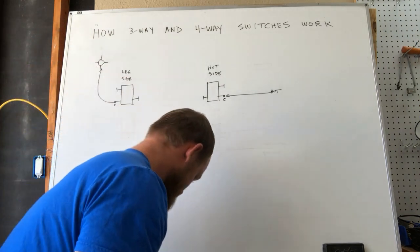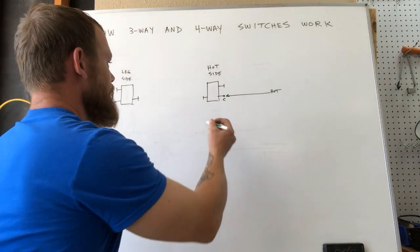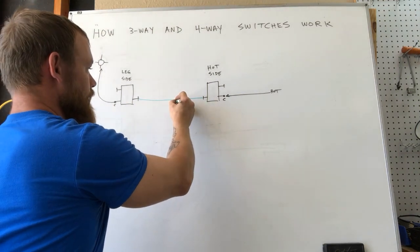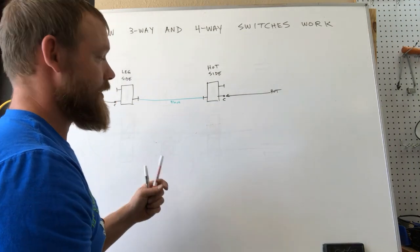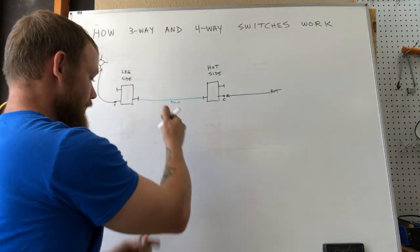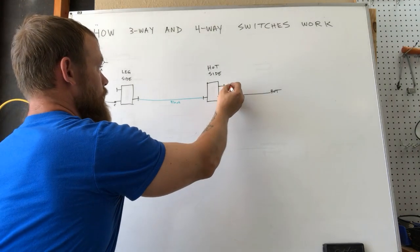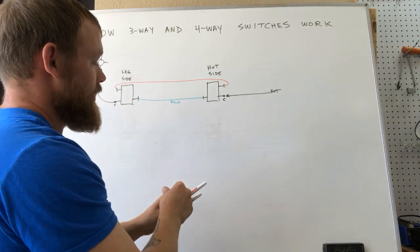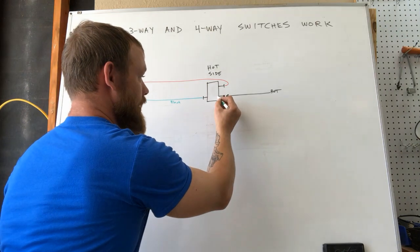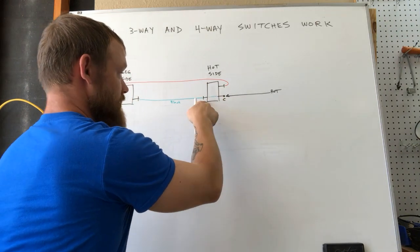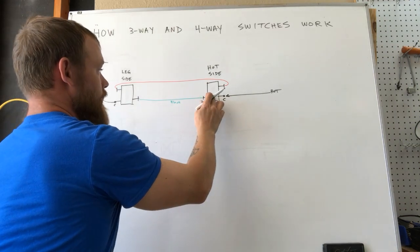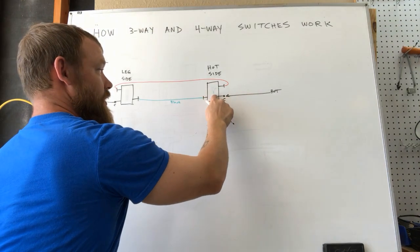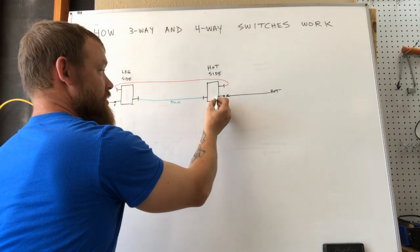So we've got one traveler that you would run from this device to this device, and we'll call this your black. I realize it's not black, it's green, but in a 12-3 and travelers that you're going to run, you're going to run one black conductor and you're going to run one red conductor. So the inside of a three-way switch is going to either connect this common terminal to this terminal, or it's going to connect to this terminal. So if you push the switch in one position, it connects these two. If you push the switch in another position, it connects these two.